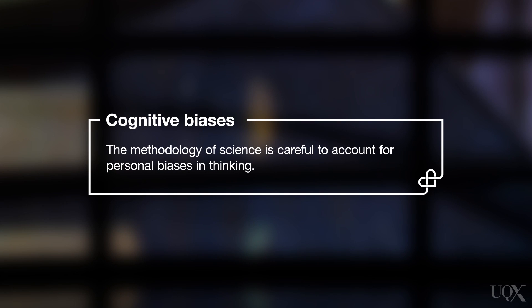Cognitive biases. The cognitive biases are individual biases in thinking. They are not so easily stretched across a group, even though each individual in the group is susceptible to them. When scientists review each other's work, they are very careful to try, not always successfully, to cater for these biases.